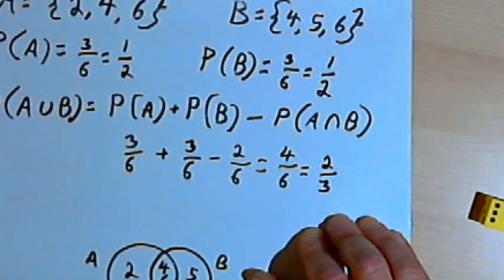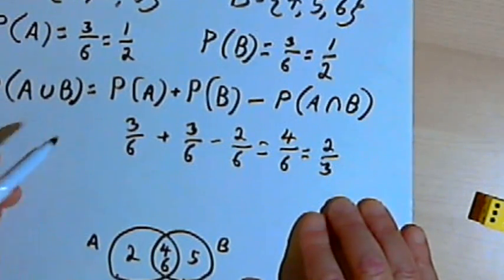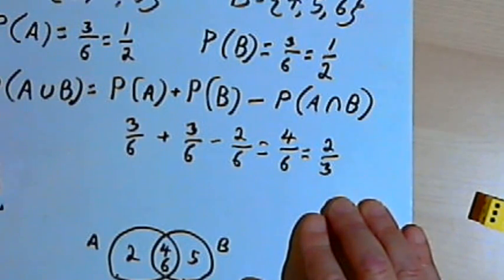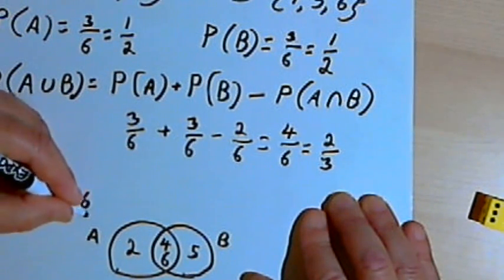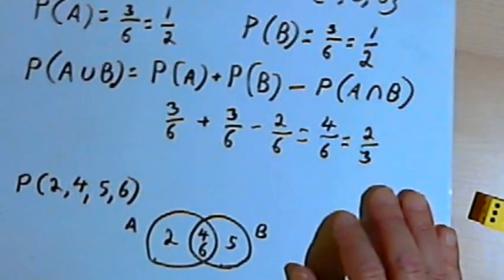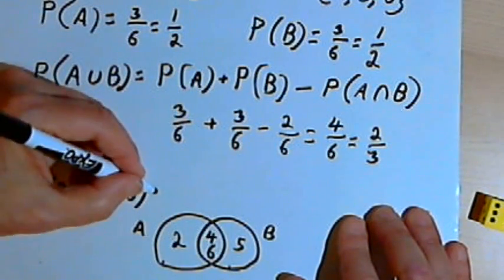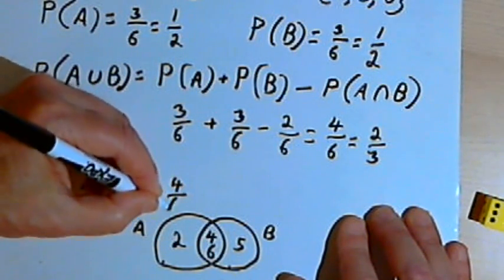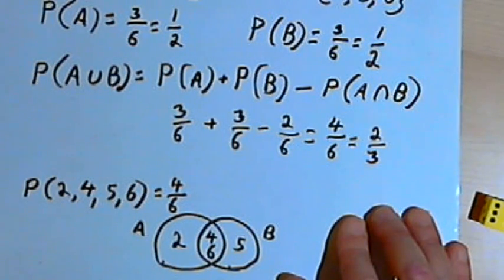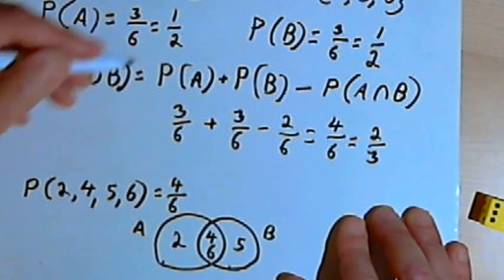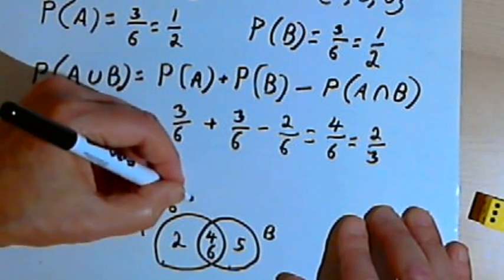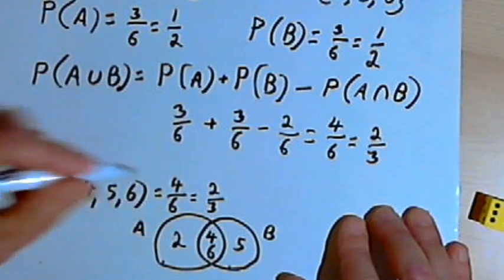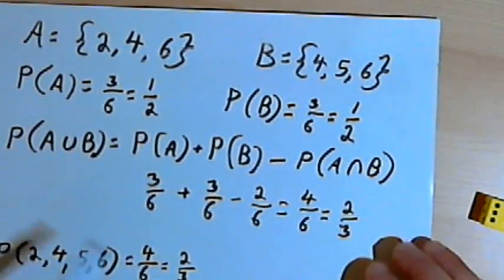Let's verify this a different way. If I want the probability of either A or B, I'm looking for the probability of a 2, 4, 5, or 6. There are four ways that could happen out of six total outcomes. So the probability of A or B — getting a 2, 4, 5, or 6 — is 4 over 6, or 2 thirds, which is exactly what the formula gives.